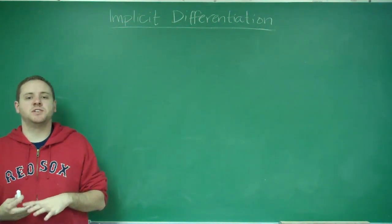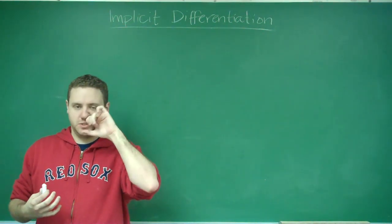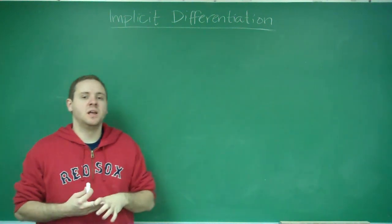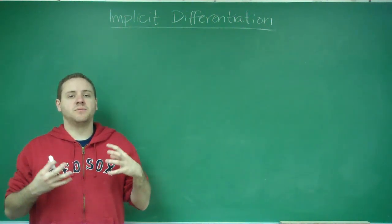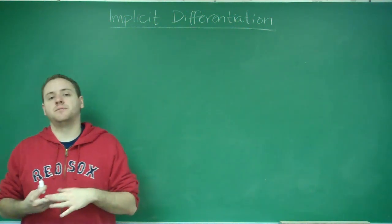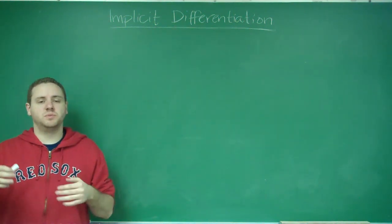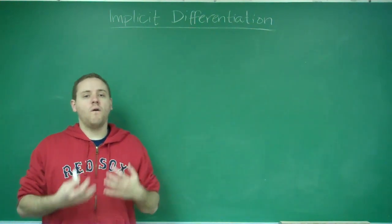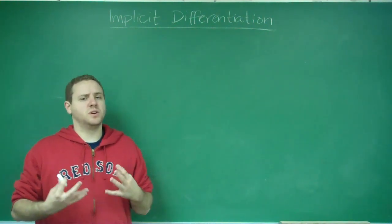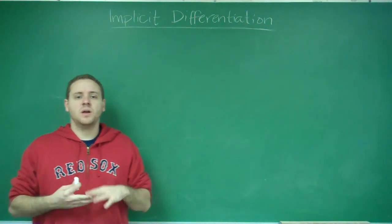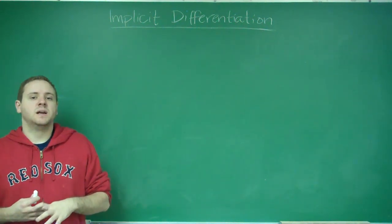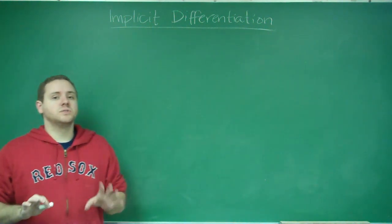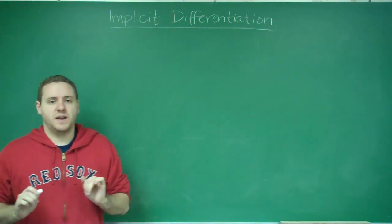Another topic in differentiation is implicit differentiation. This is a little different from everything else because implicit differentiation is what you use when you have an expression that is not a function of x. Up until this point, when you've been doing power rule, chain rule, product rule, quotient rule, you've generally been dealing with functions where x is your only variable and you always have y equals. In general, that's not going to be the case, but all those rules still apply just in a slightly different fashion.